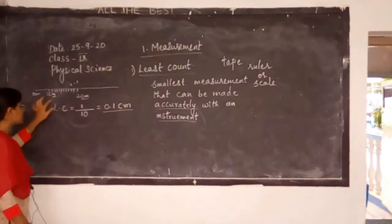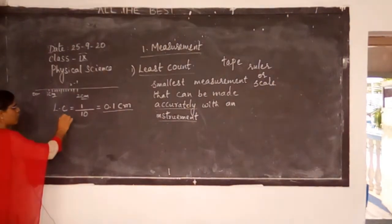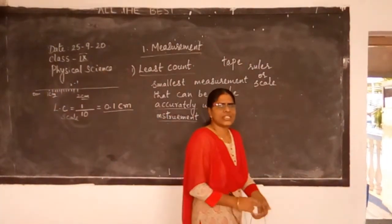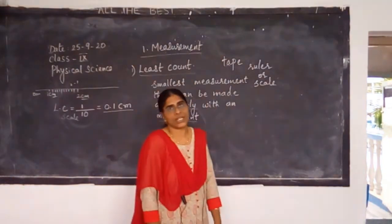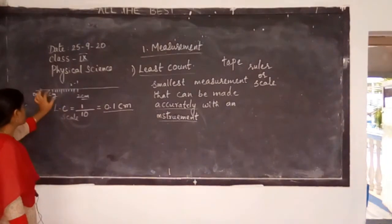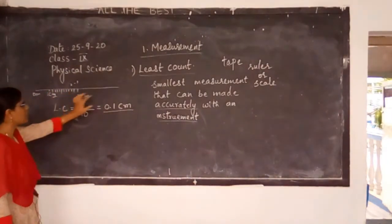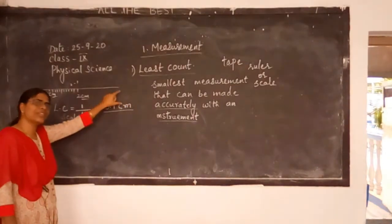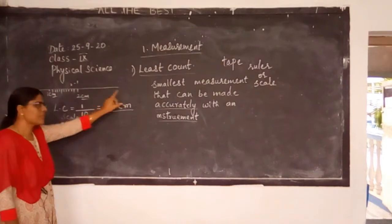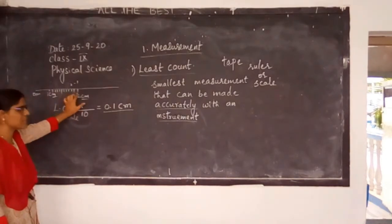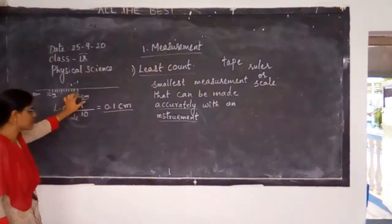Look on your scale — how many lines are there between 1 cm and 2 cm, or between any two readings like 3 and 2, or 4 and 3. Find out how many small divisions are there. Using this scale we find there are 10 smaller divisions between each centimeter.